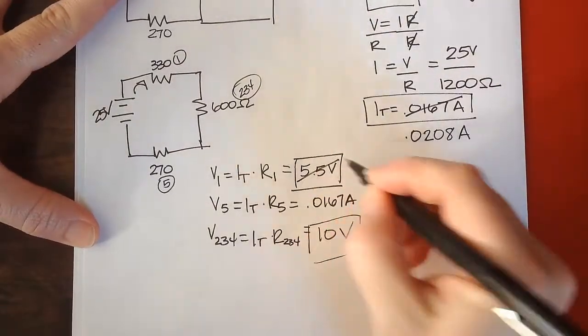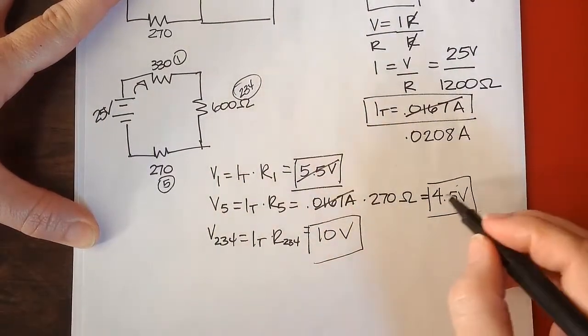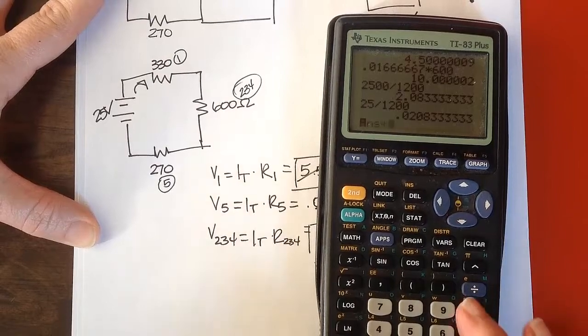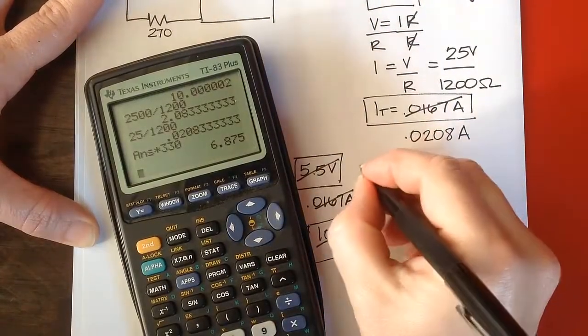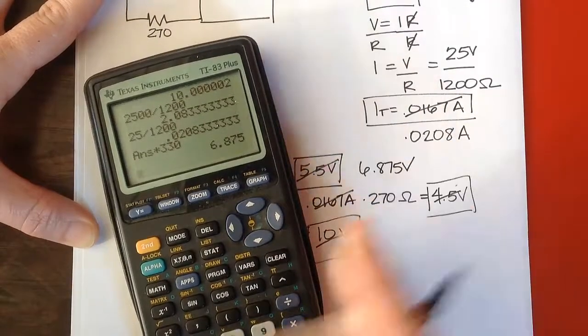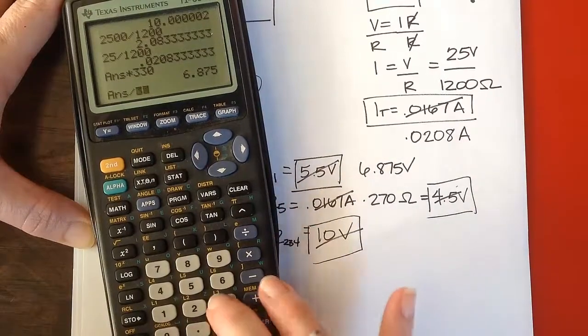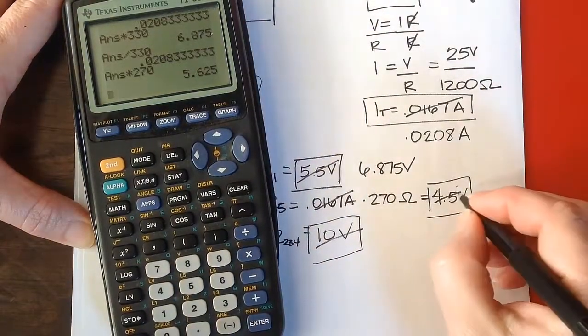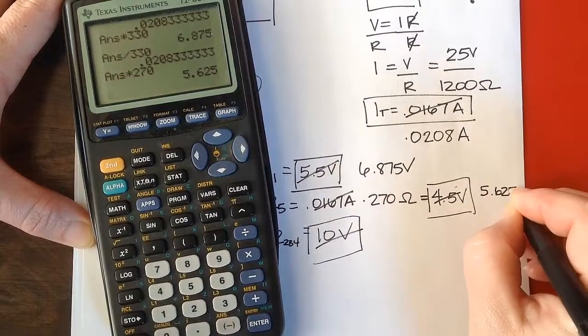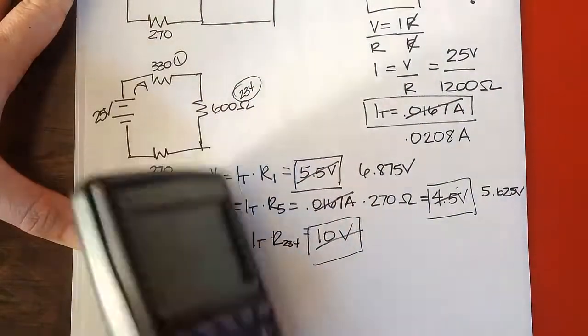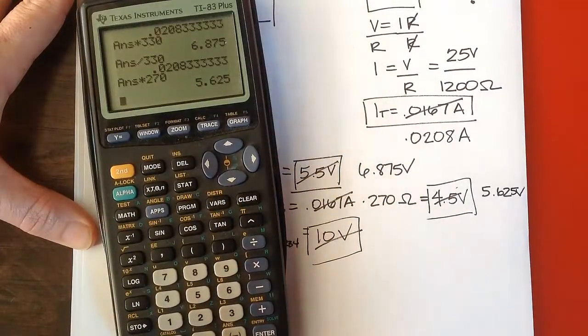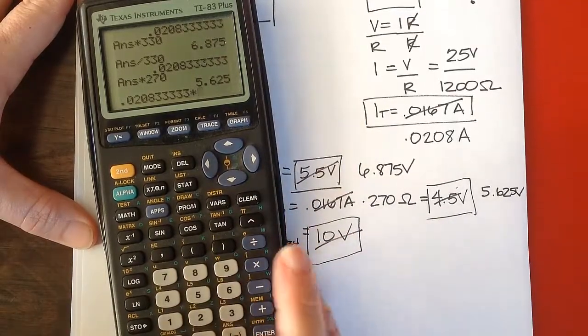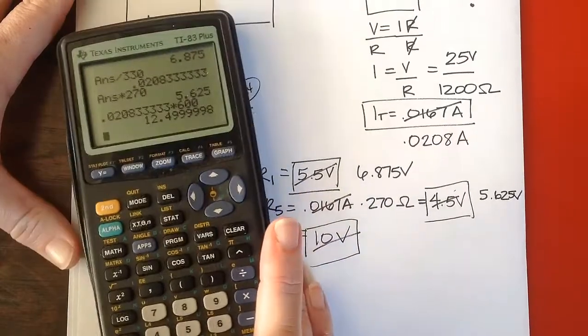So that's going to change all these answers. And let's recalculate. 6.875 volts for the first voltage drop, so times 270 for that fifth one, now we get 5.625 volts. And then for the 600 ohms, and I get 12.5 volts.